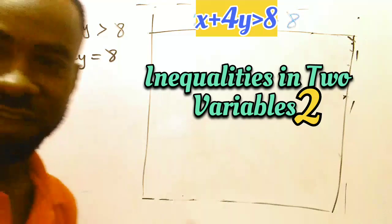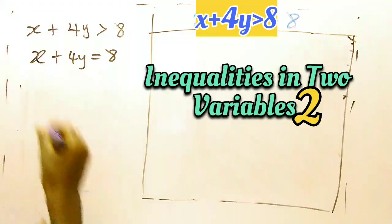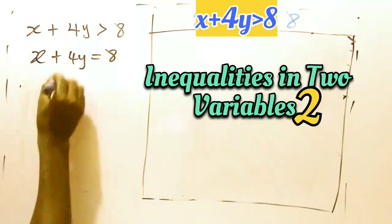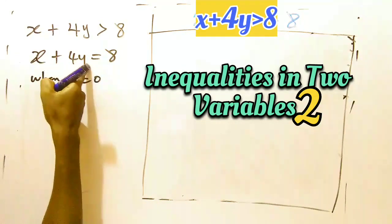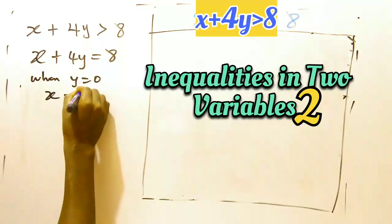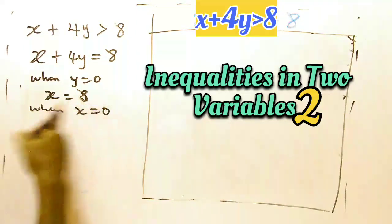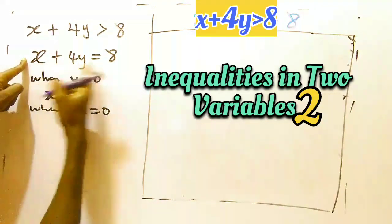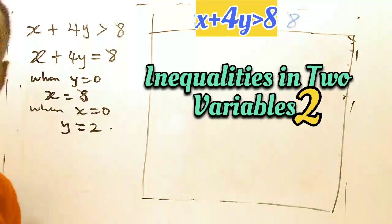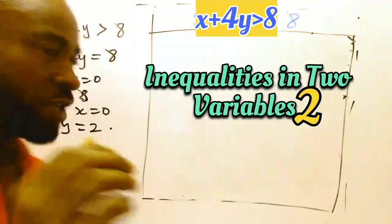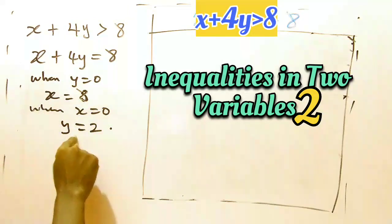After doing that, the next thing to do is to get the intercepts for x and y. When y is 0, x will be equal to 8. And when x is equal to 0, y will be equal to 2. So I've got my intercepts: x equals 8 and y equals 2.